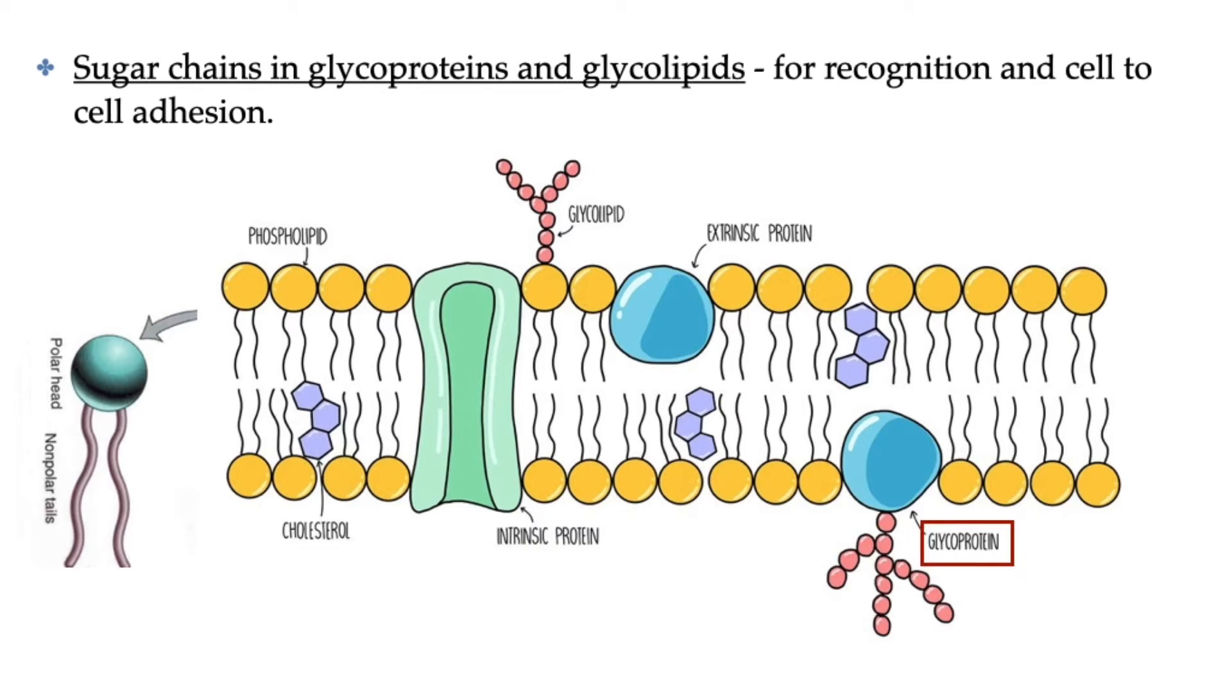Some of the proteins have sugar chains attached to them forming glycoproteins. Glycoproteins have a variety of functions but mainly serve as recognition signals to other cells. The carbohydrate or sugar chains that are attached to these proteins allow for some unique shapes which can act as markers for cell-to-cell recognition. For example, it allows cells to distinguish self from non-self, which is the basis of our immune system. The sugar chains also serve a role in cell-to-cell adhesion, allowing cells to attach to other cells to form tissues.